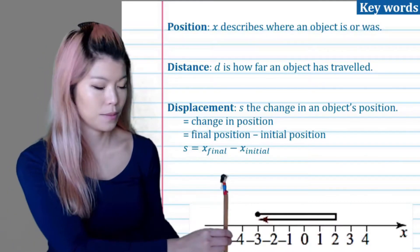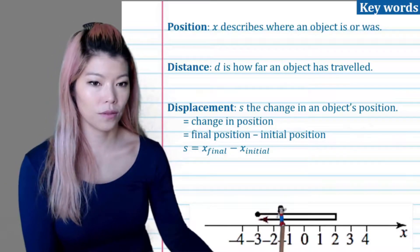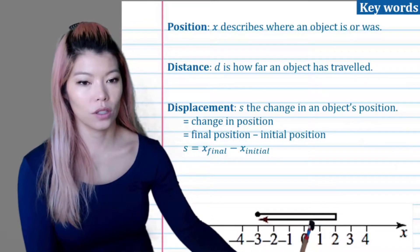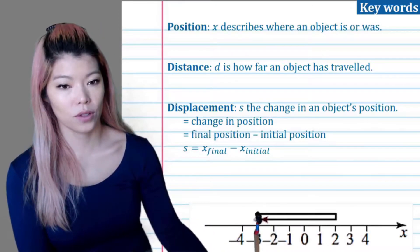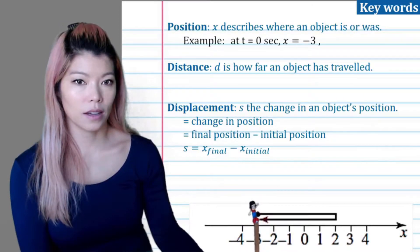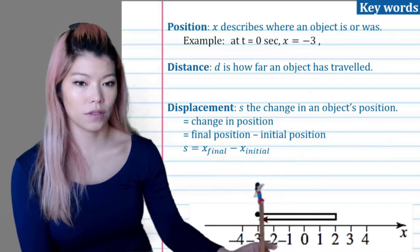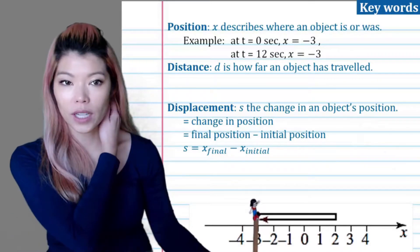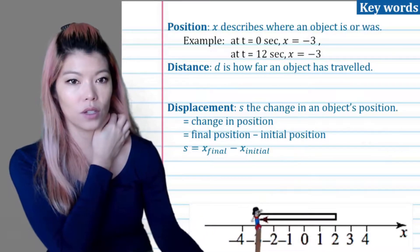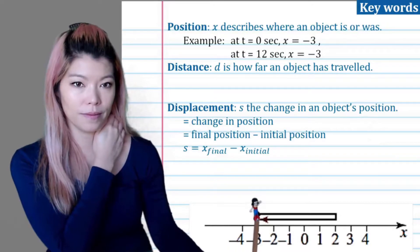Let's do an example. I have a little toy — she is at position negative three, and she walks to negative two, negative one, zero, one, two, then she turns around and walks back to zero, negative one, negative two, negative three, back to where she started. The position depends on when we're looking. At zero seconds her position is negative three, or three to the left of zero. But if we look at twelve seconds, she's also at the same position.